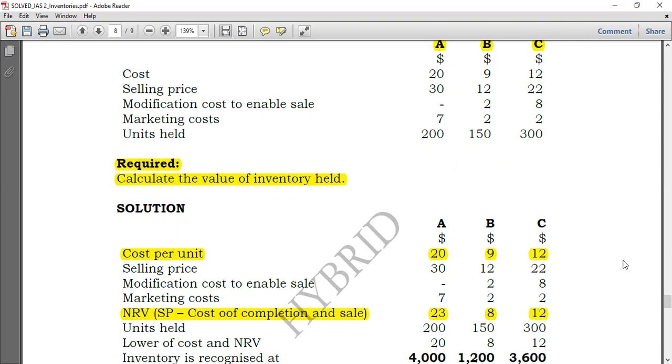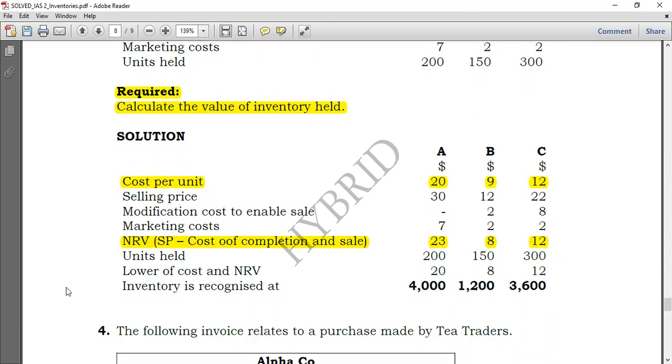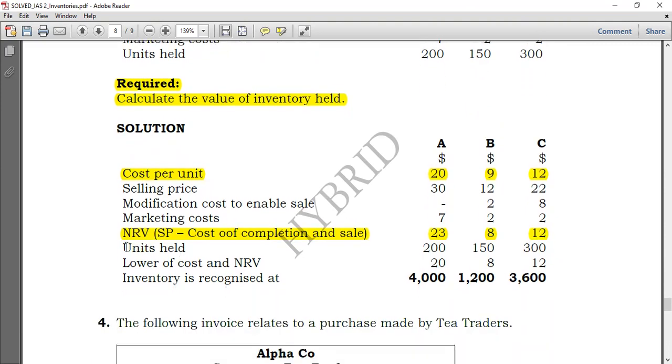So I have net realizable value per unit, and also I have cost per unit. So you can compare them. Actually, we are given the units held here. Units held, we have them, but actually, there's no need to use them right now. But I just know that for A is 200, for B is 150, and for C is 300.